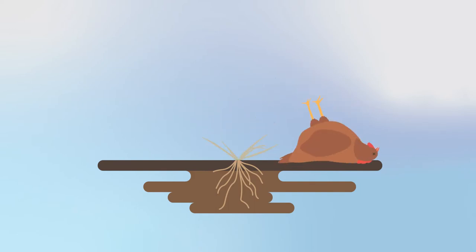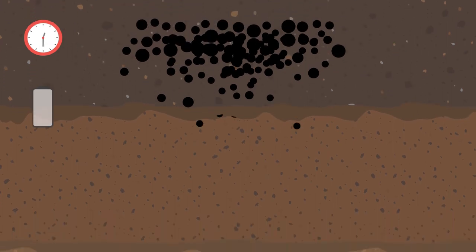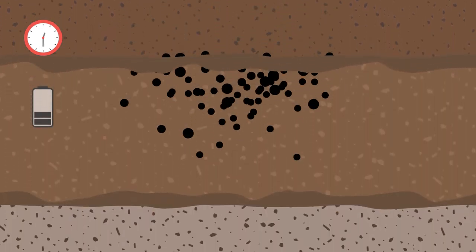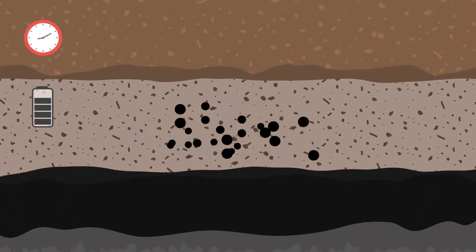When plants or animals die, they decompose and the carbon moves down into the pedosphere. Some of that carbon is buried and will become a fossil fuel in millions of years.